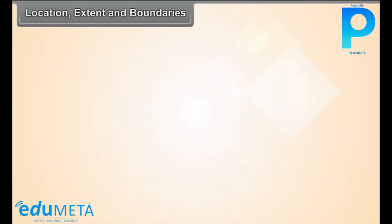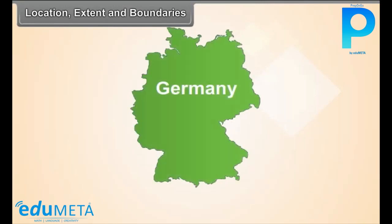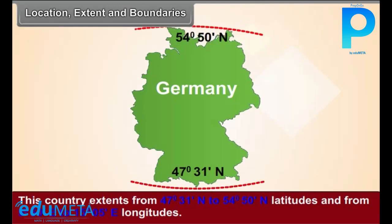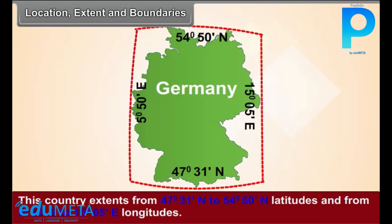Location, Extent, and Boundaries. This country extends from 47 degrees 31 seconds north to 54 degrees 50 seconds north latitudes, and from 5 degrees 50 seconds east to 15 degrees 5 seconds east longitudes.